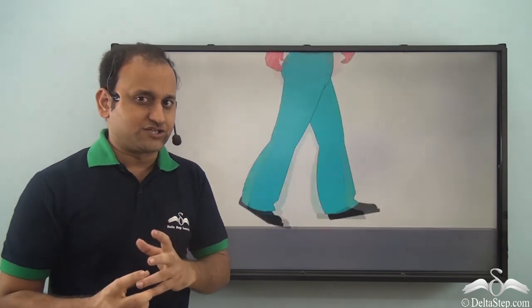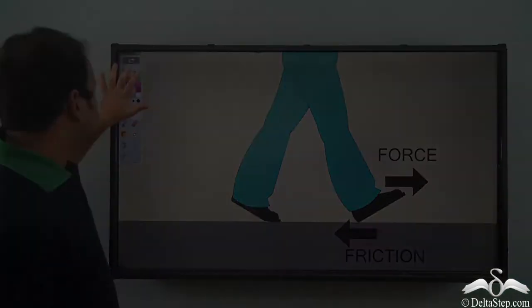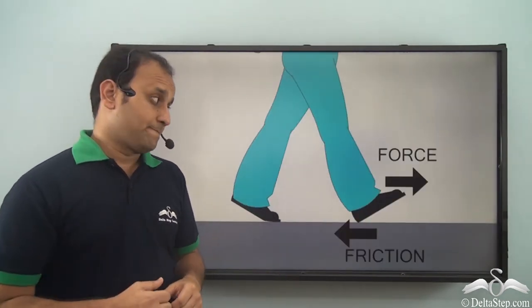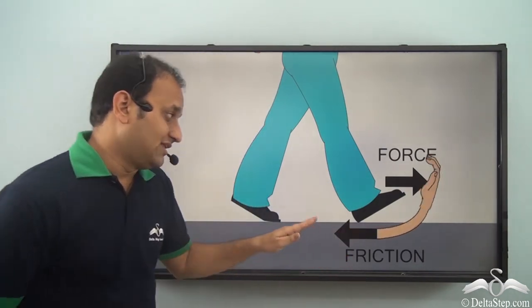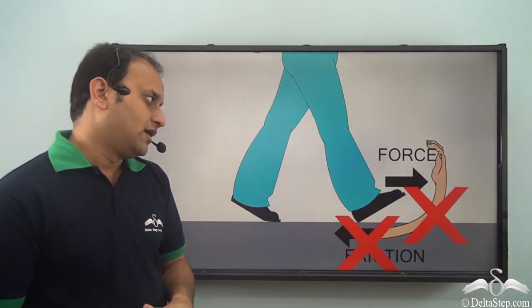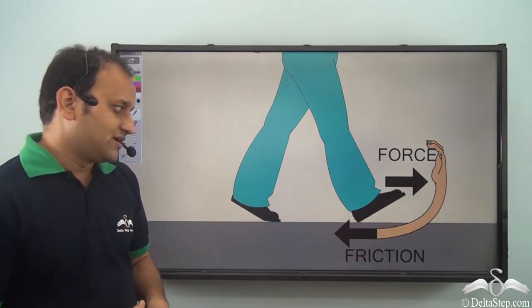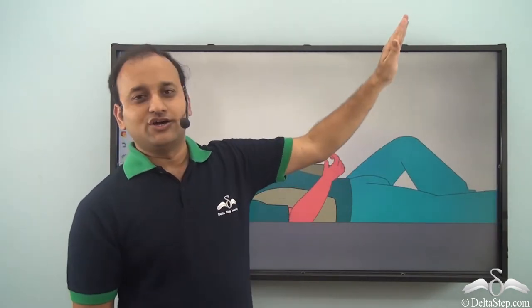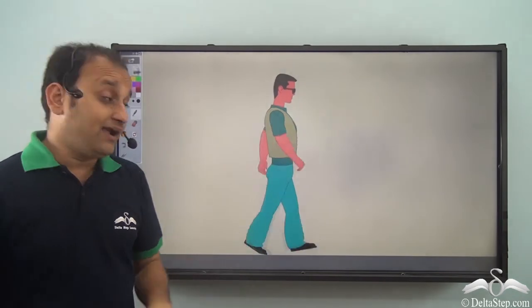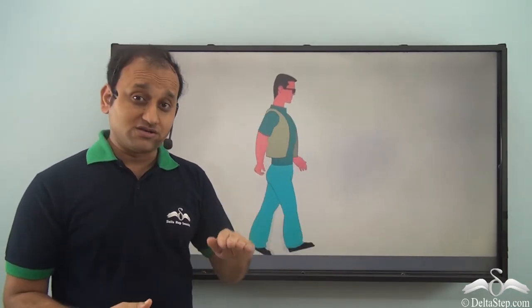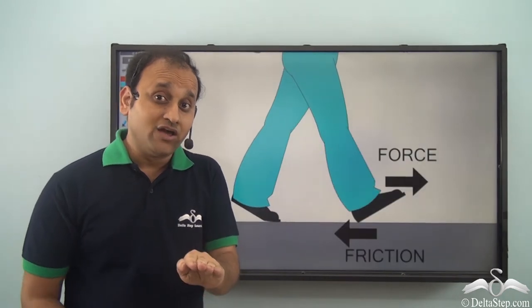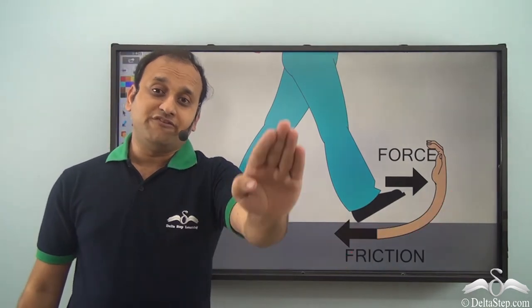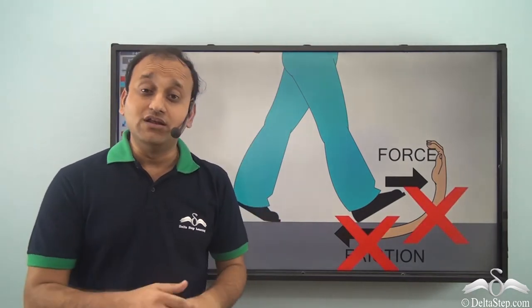Now what if there was no friction? If there was no frictional force, there would be nothing to stop the force applied on the ground, and as a result you would slip off. You can never walk without friction because the force you apply on the ground will not be opposed by anything. As a result it will pull your feet forward and you will slip off.